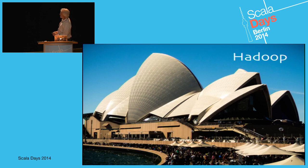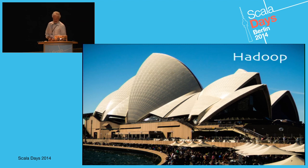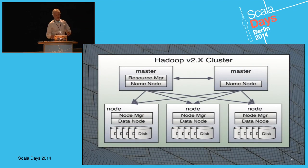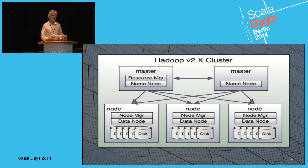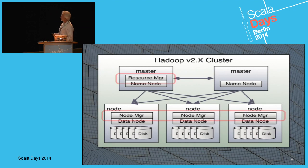Let's talk about Hadoop. All the pictures are the Sydney Opera House — I like to put photos that have nothing to do with the talk. If you've never worked with Hadoop, a quick introduction: it is a cluster data system where you make up for inefficiencies with scale. If you do lots of stuff in parallel, you don't care so much if any one of them is slow.